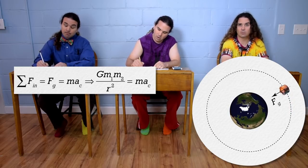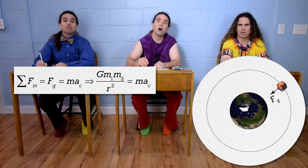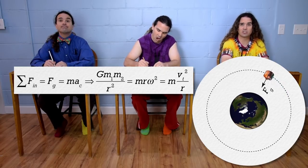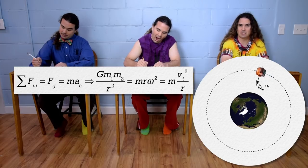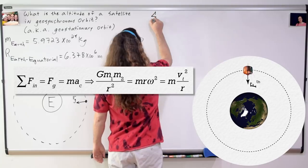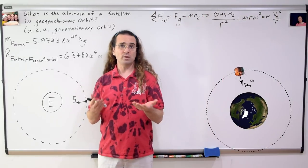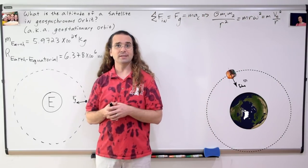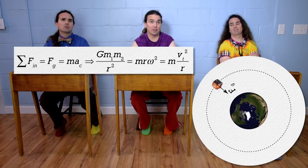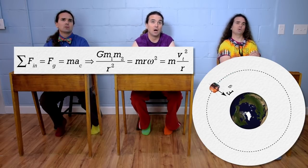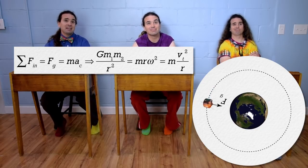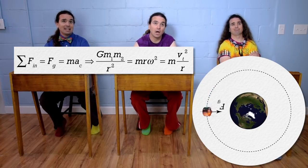For centripetal acceleration, we can use either radius times angular velocity squared, or tangential velocity squared divided by the radius, but which one to use? Well, what do we know about the satellite? It is in geosynchronous orbit, so it revolves at the same rate the Earth rotates. So we can find the angular velocity of the satellite.